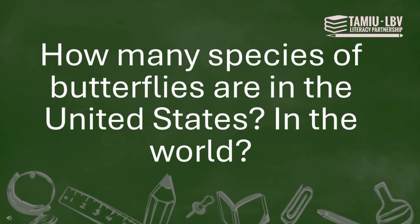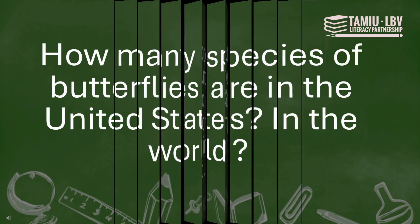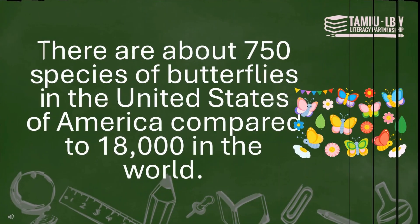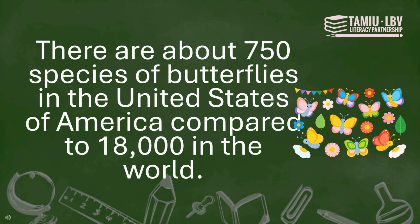How many species of butterflies are in the United States, and in the world? There are about 750 species of butterflies in the United States of America, compared to 18,000 in the world.